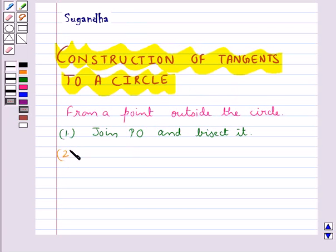Now, in the next step, taking M as the center and radius as MO, we draw a circle.